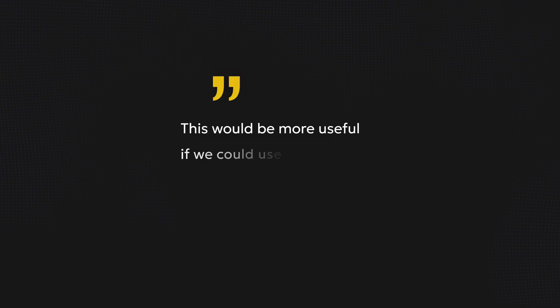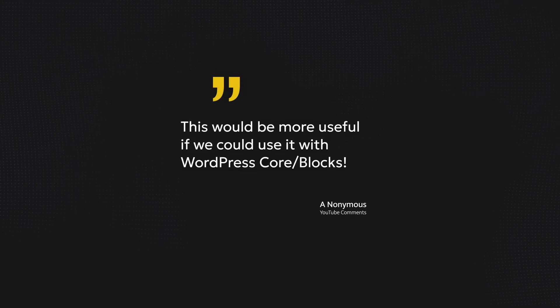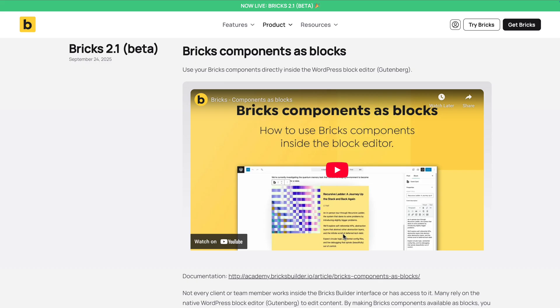I released the first look at Bricks components in version 2.0 a week or two ago, and one of the comments that came up was this would be much more useful if we could use this inside WordPress core in Gutenberg. Well, with the 2.1 release we can do that. In this video I want to give you a very brief overview of how to enable that functionality and what it actually does. So let's take a quick look.